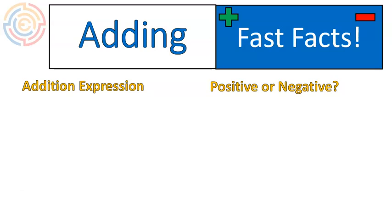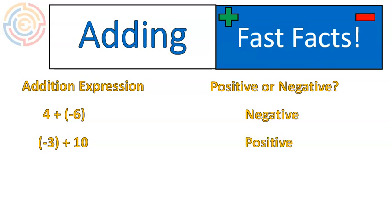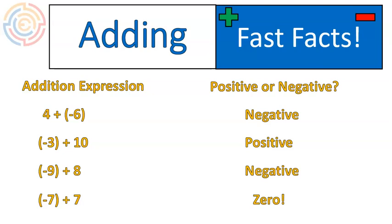Let's do some more fast facts — just look at the expression and tell me: positive or negative? Positive four plus negative six — negative, because six is larger than four, so there are more negatives than positives. Negative three plus ten — positive, because we have ten positives and only three negatives. Negative nine plus eight — we have nine negatives and eight positives, so the final answer is negative. And negative seven plus seven — that's a trick question: the answer is zero, because adding opposites gives you zero.